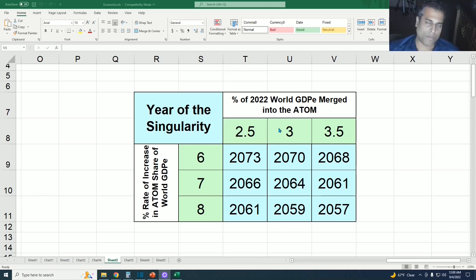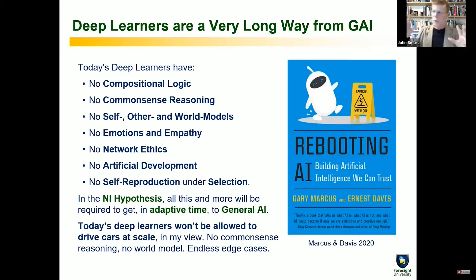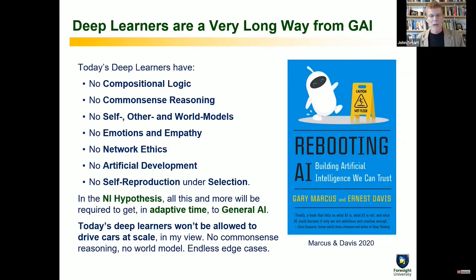In a recent presentation, John Smart references Marcus and Davis's book Rebooting AI as a great overview of how far we are from AGI today. He notes that deep learners have a little biomimicry but no compositional logic, common sense, or reasoning; no self-model, world model, or other model; and thus no empathy or ethics. They also have no emotions — which are needed to break a logical logjam, because an amygdala lesion in a human brain prevents decision-making by removing gut instinct and affective state summaries. This affective computing is something future AIs will need.